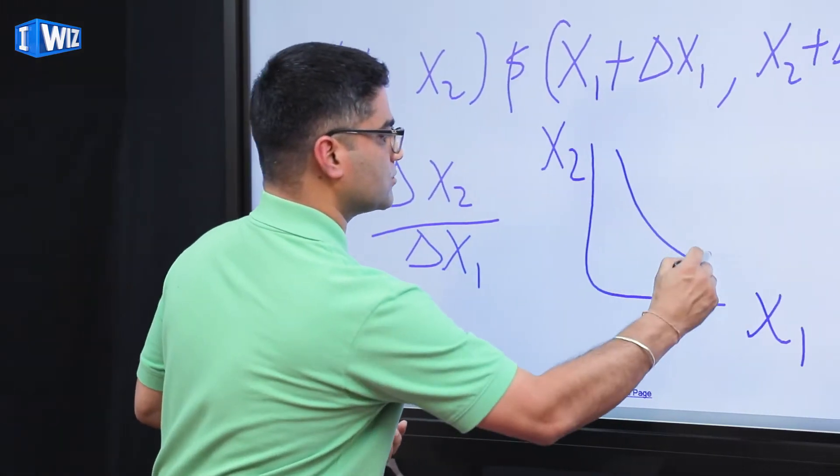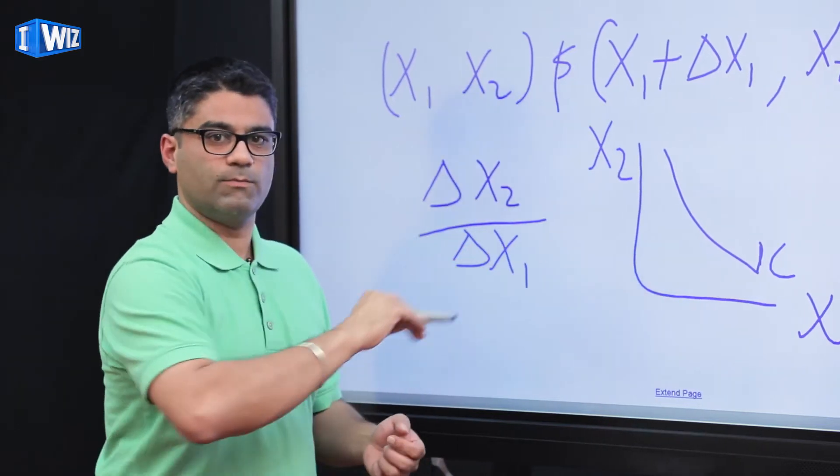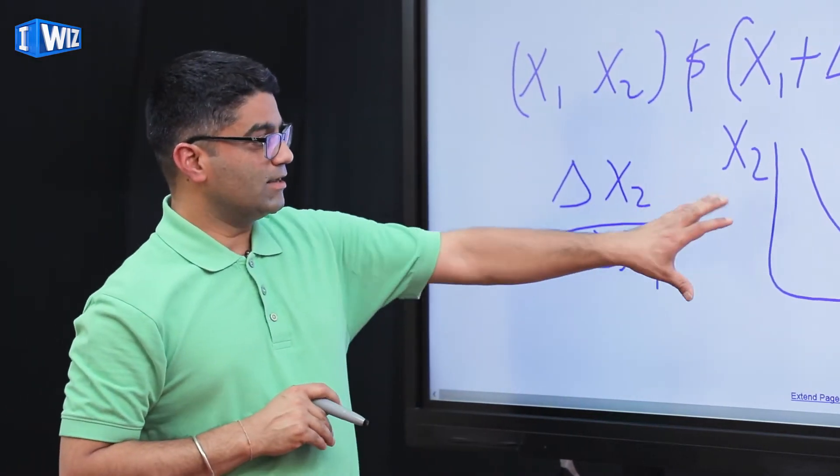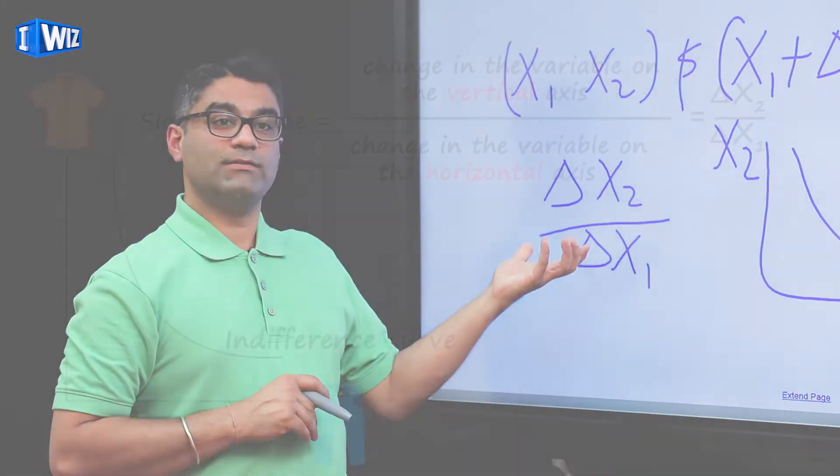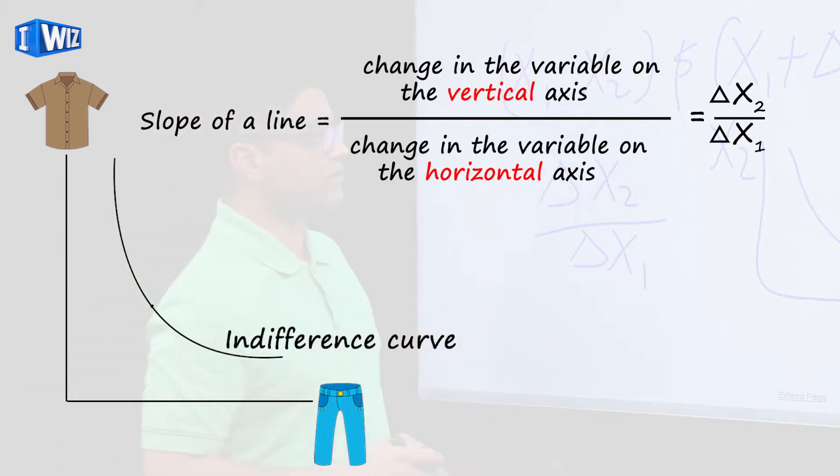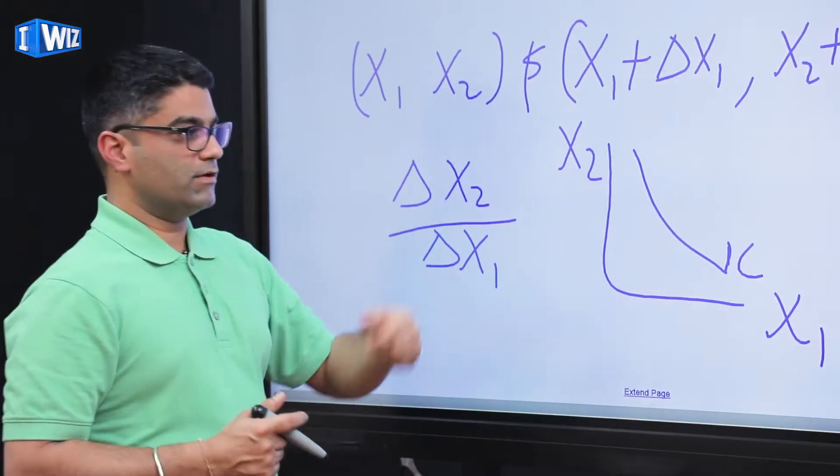When we talk about the indifference curve, we'll talk a little bit more about that in just a second. It's a slope of this line given by this ratio. Make sure you understand what it means to have the slope of the indifference curve.